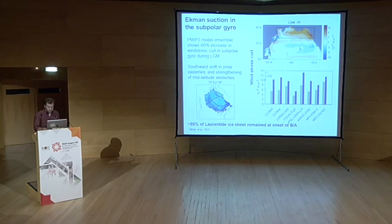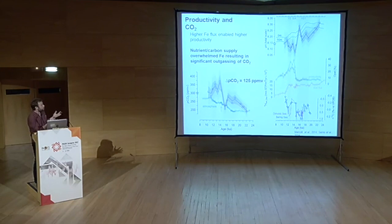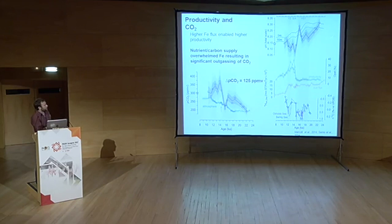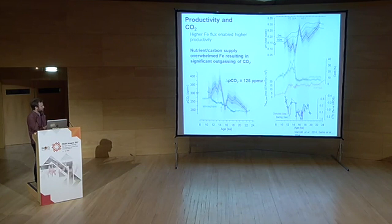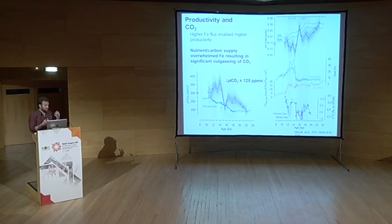Higher iron availability during the Bølling-Allerød (from higher dust flux) enabled productivity to exceed modern levels. But the low pH shows most nutrients went unutilized, giving really high CO2 values in the surface ocean. Converting the pH record to CO2 shows very high values during the Bølling-Allerød, which would have driven outgassing from the North Pacific. This could explain the abrupt CO2 increase at the onset of the Bølling-Allerød and maintain the high CO2 seen through that period, even as Southern Ocean and North Atlantic processes would suggest CO2 should decrease.